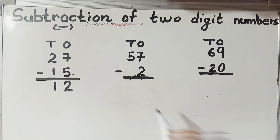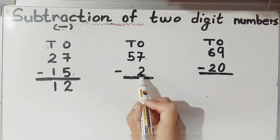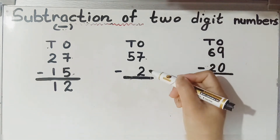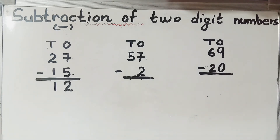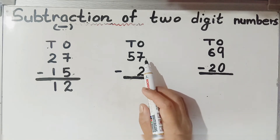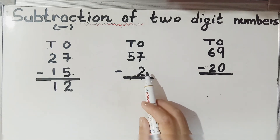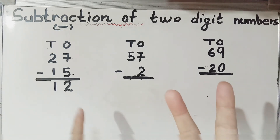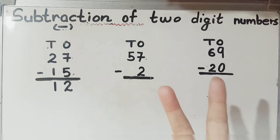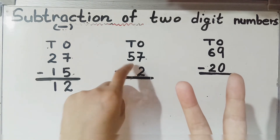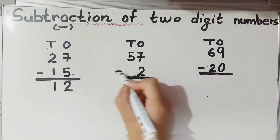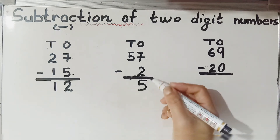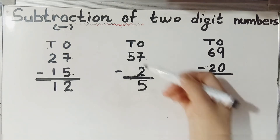Let's solve another example: 57 minus 2. We subtract the ones first — seven minus two at the ones place. We'll subtract by backward count. The bigger number is seven and the smaller number is two. Keep seven in your mind and open two fingers. Count the numbers before seven: six, then five. So seven minus two equals five.